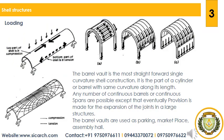The barrel vault is the most straightforward single-curvature shell construction. It is part of a cylinder with the same curvature along its length. Any number of continuous barrels or continuous spans are possible, with provision made for expansion joints in large structures. Barrel vaults are used in parking, marketplaces, and assembly halls. The types of barrel vaults are short span barrel vaults and long span barrel vaults.